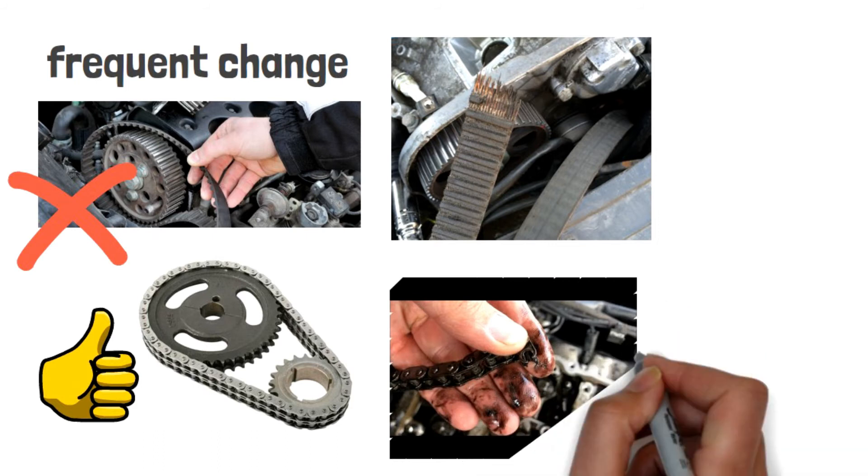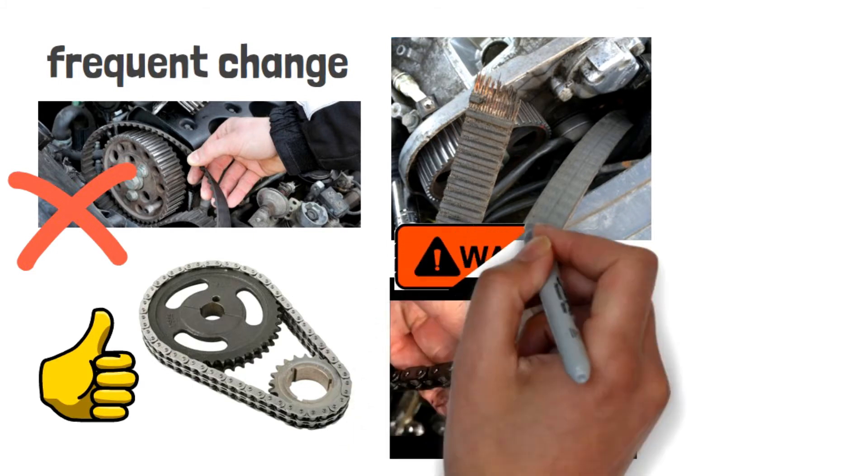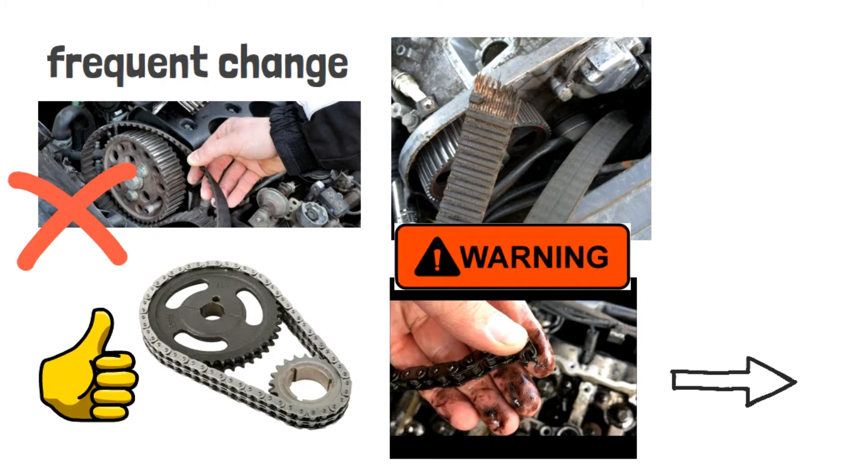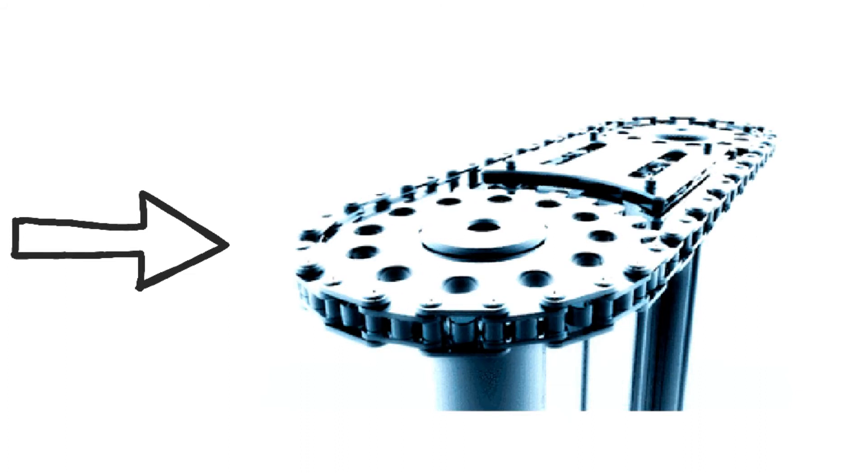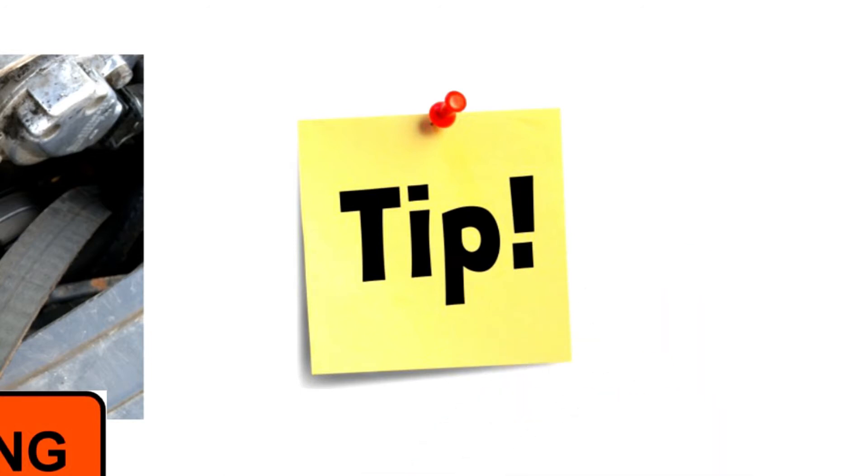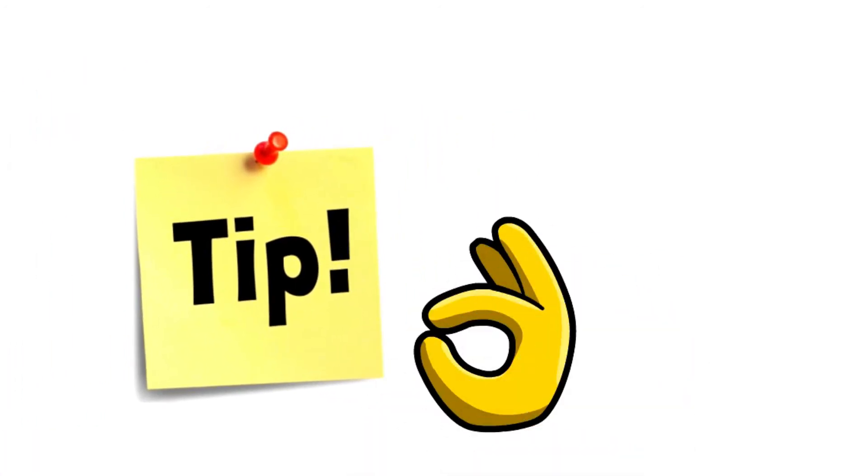Just like the timing belt, the faulty timing chain will also cause serious engine damage problem once the chain snapped. Nevertheless, the longer lifetime and lower snapped possibility are still making more and more manufacturers to use the chain design. As long as you know the tips to look after it and the time to replace, you can lower the timing chain repair cost.